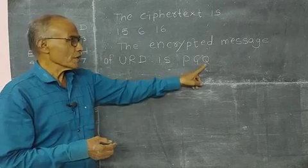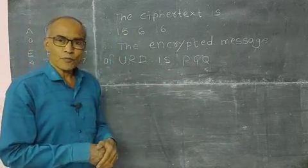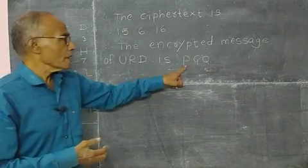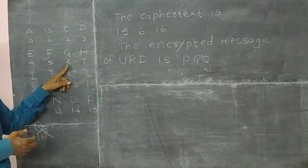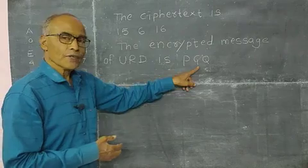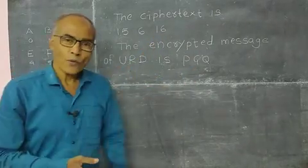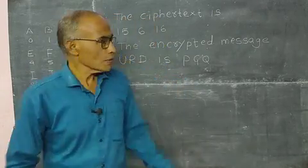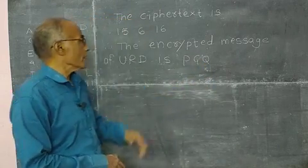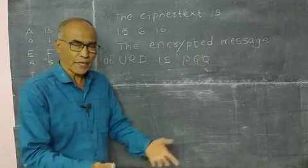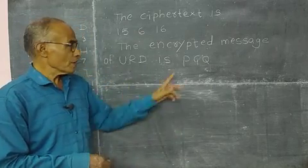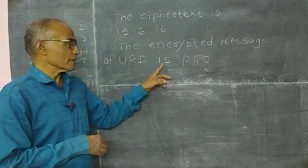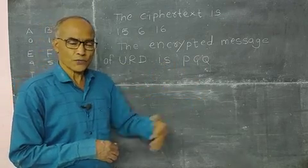That is called cipher text. That means URD, so we have to convert to alphabets. 15 - what is 15? P. 6 - what is 6? G. And 16 - what is 16? Q. So 15, 6, 16 is encrypted message. That means P, G, Q. So URD is written as PGQ.